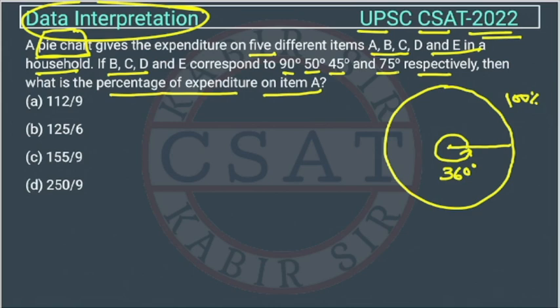The question is saying that we are representing the expenditure in the pie chart. How many items are there? Five items — A, B, C, D, E — and four of those items' angles have been given. B, C, D, E correspond to certain angles. So the angle of A will be: from the total angle, if we add those and subtract them, that will be the angle of A.